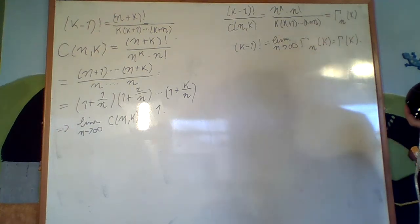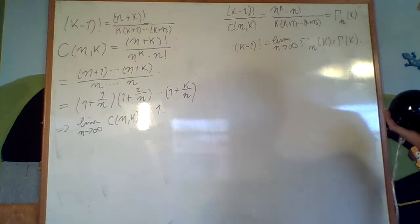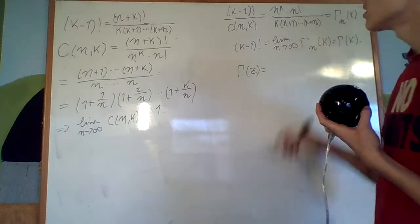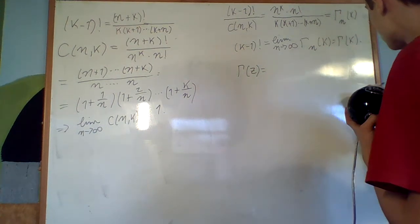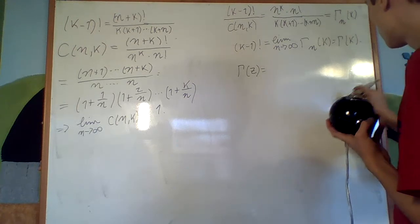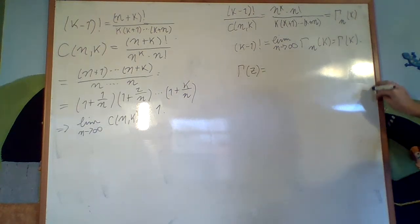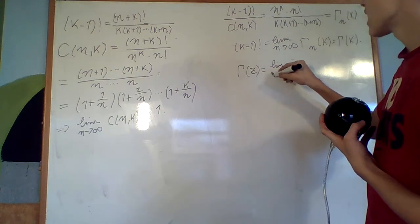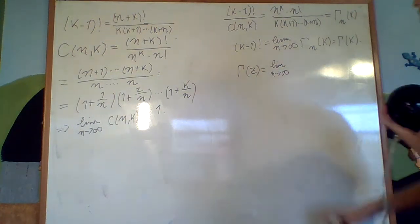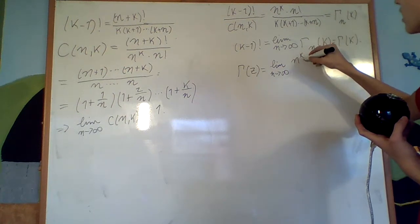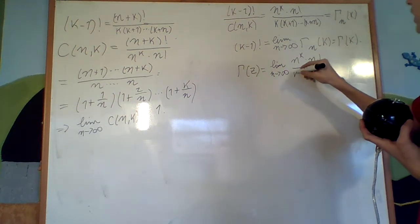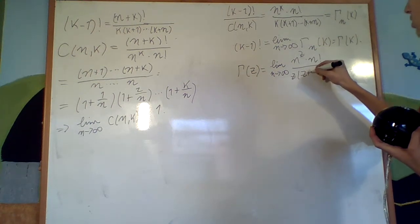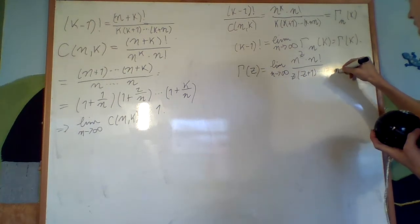This generalizes to the real numbers — and to complex numbers — although I won't prove convergence for all of them. The function is defined for all complex numbers except the negative integers and zero. So Γ(z) equals the limit as n goes to infinity of n^z times n! over z(z+1)(z+2)···(z+n), replacing all the k's with z.